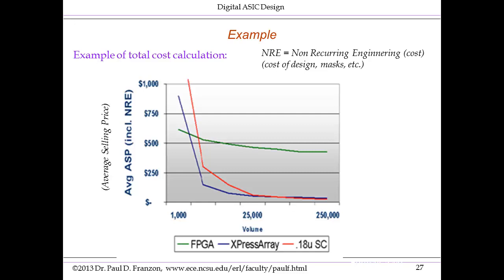The average selling price includes NRE — non-recurring engineering — which refers to the cost of doing the design and the first mask set. This cost has to be amortized across the number of chips you produce. As an extreme example: if you're making only one chip and you spend $40 million designing it, that one chip costs $40 million. But if you make 40 million of those chips, the amortized design cost per chip is only $1. Volume makes a very big difference for standard cell design, less so for a gate array, and much less for an FPGA.